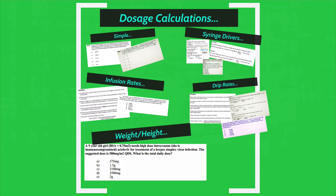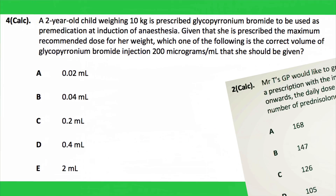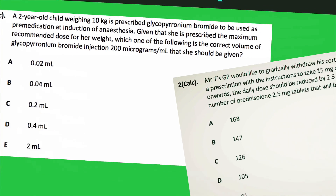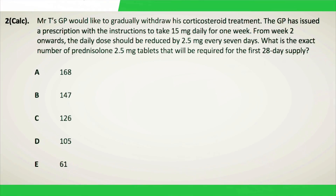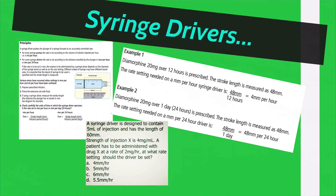One of the cornerstones of pharmaceutical calculations are dosages. They can be split up into the simple, and then syringe drivers, infusion rates, drip rates, and weight and height calculations. You may want to pause the video at the different questions that we're cycling through.